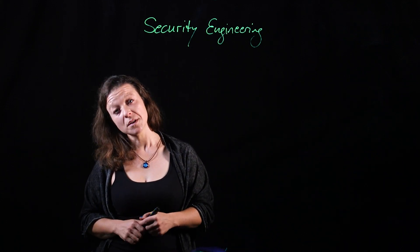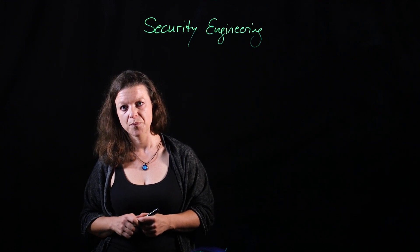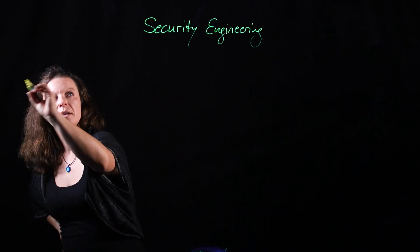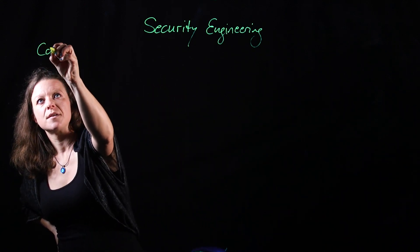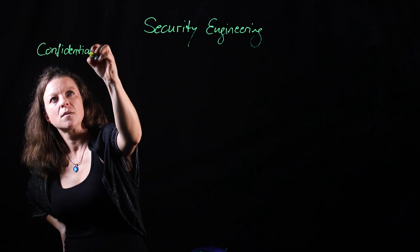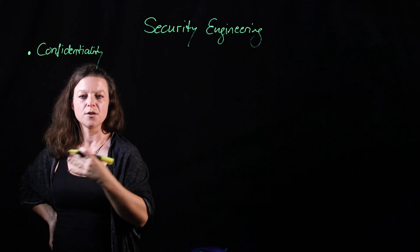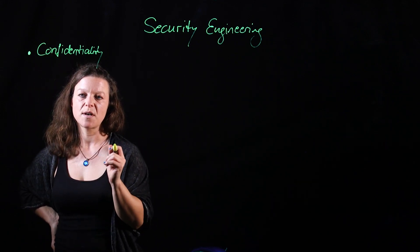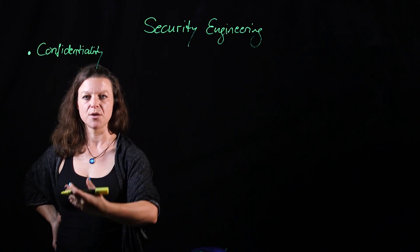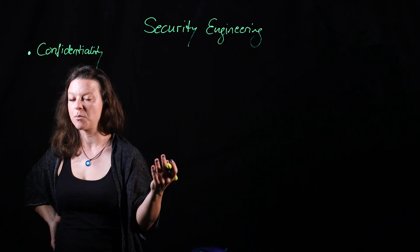How could your system be exposed? There are three main dimensions of security engineering. The first one is confidentiality — the confidentiality of your data. If a hospital makes a medical record about you, you want that information to be secure. You don't want that to be publicly available.